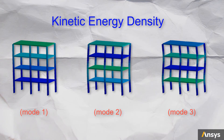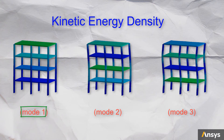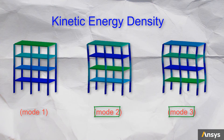Here are the contour plots for the kinetic energy densities in the system at three different modes. In mode 1, which is the most prominent one, the kinetic energy is concentrated on the top floor, so it will need most of the damping. Modes 2 and 3 indicate that some energy is also distributed among the lower floors, so the lower floors can also use some damping to attain stability.